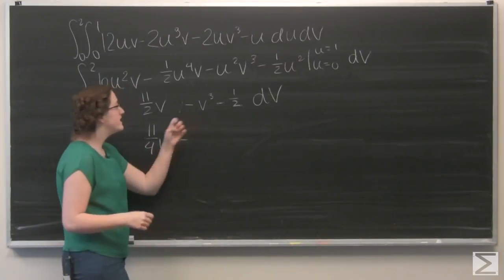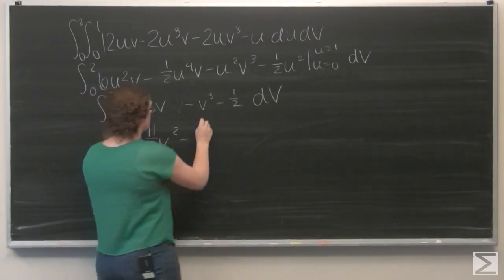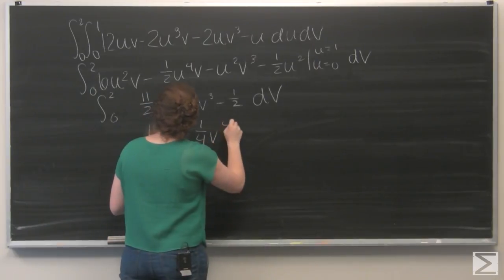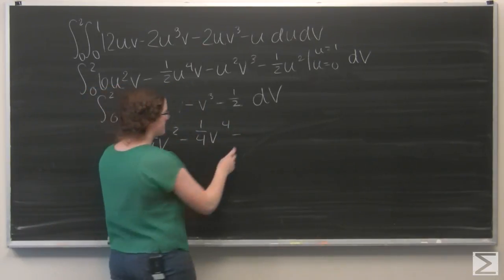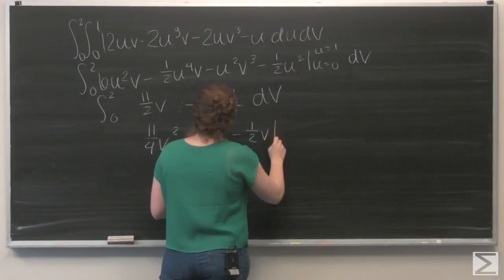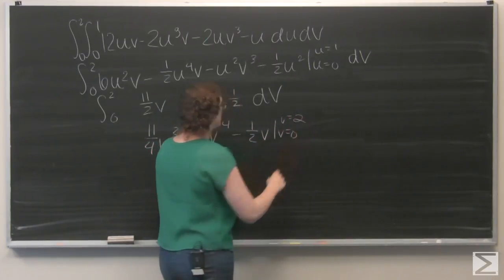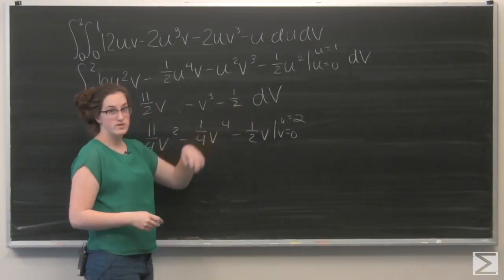And v cubed becomes 1 fourth of v to the fourth. And 1 half v becomes 1 half v.